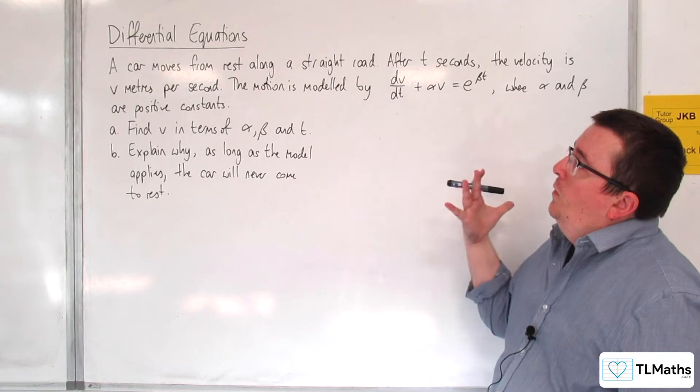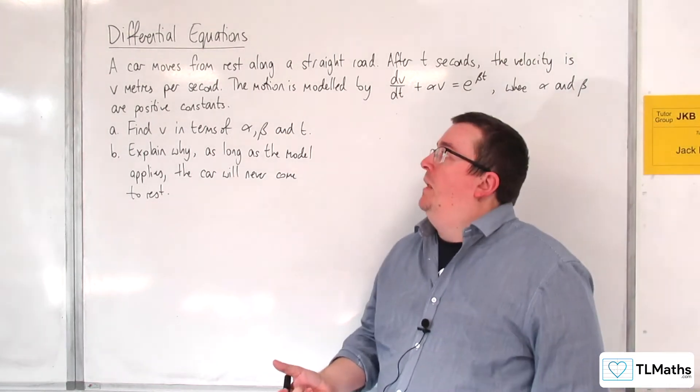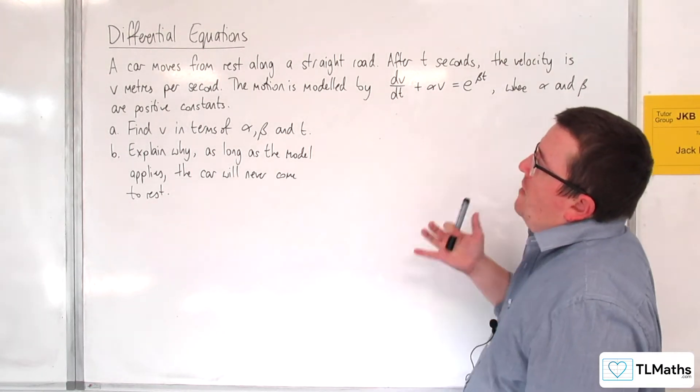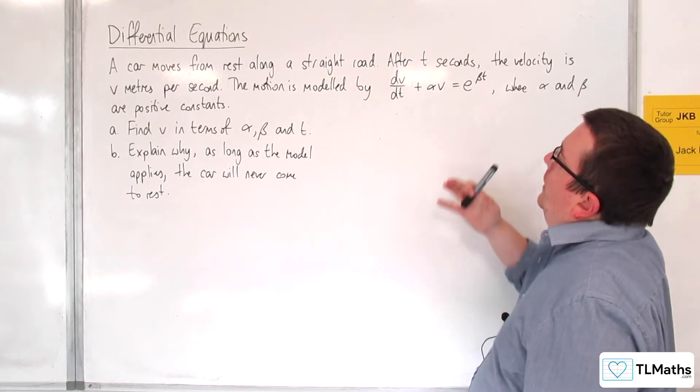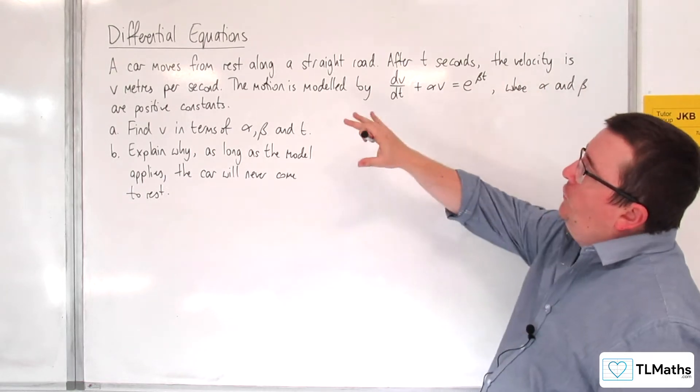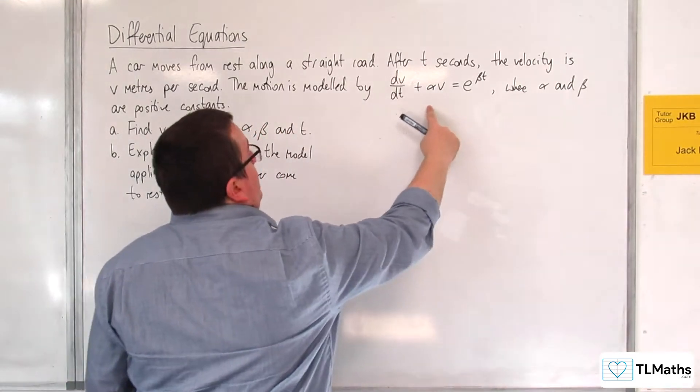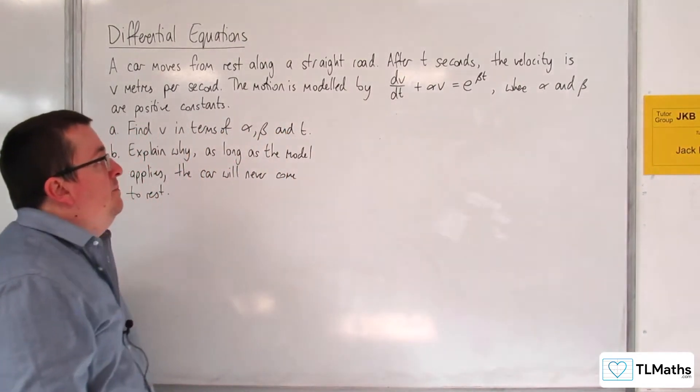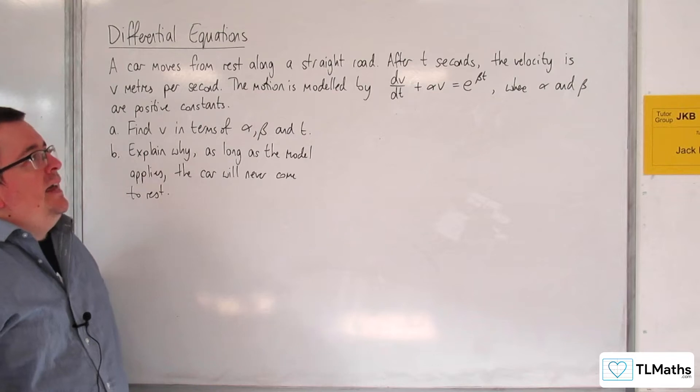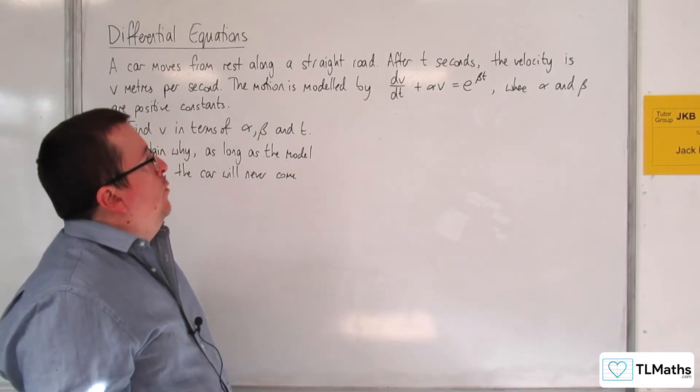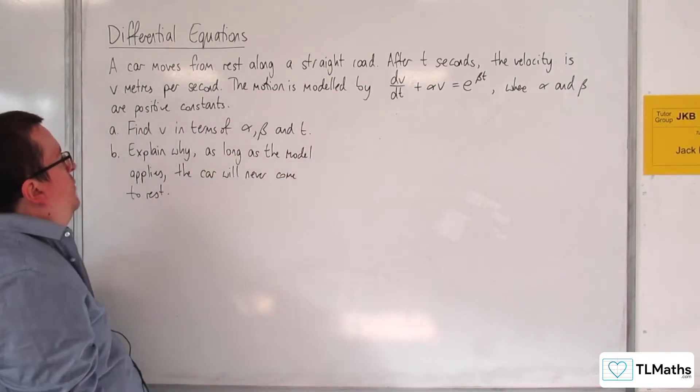In this video, we're going to solve this modeling problem. A car moves from rest along a straight road. After t seconds, the velocity is v meters per second. The motion is modeled by this differential equation: dv/dt plus αv equals e^(βt), where α and β are positive constants.